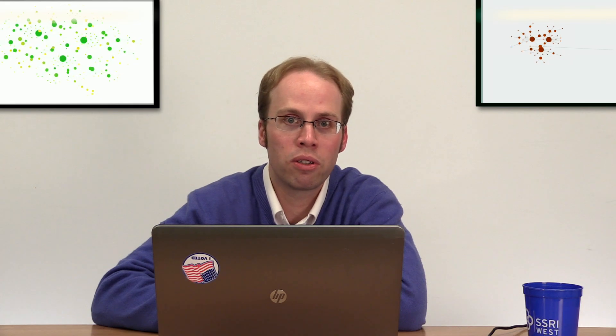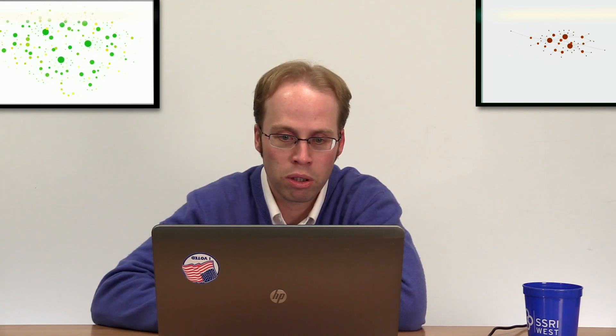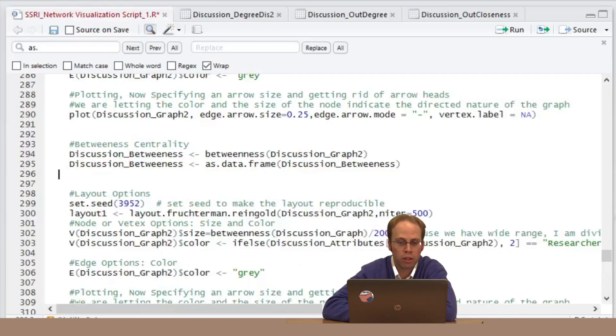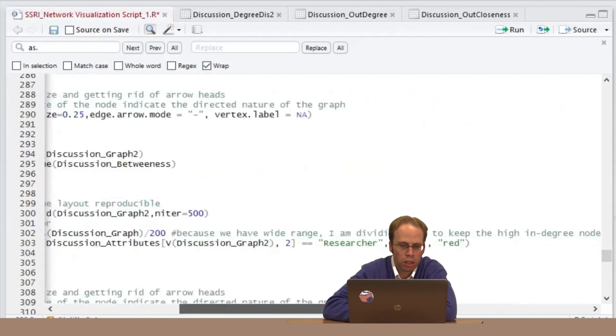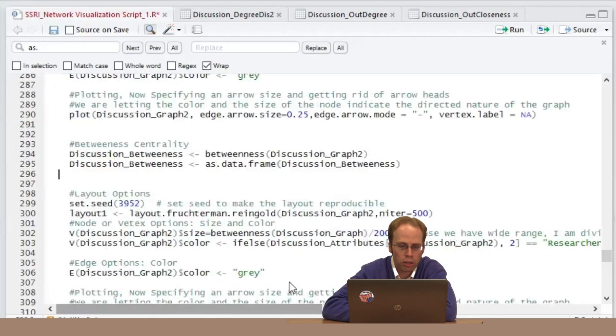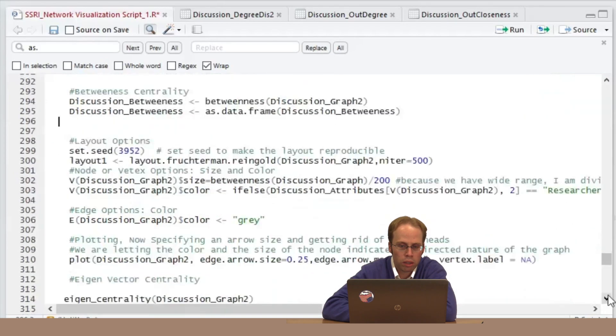And other network packages might do this for you, but this is R, so we have to do this ourselves. But it's okay. At least we're explicit and we know how we're scaling it. There's nothing black box, at least with respect to that. So let me go down here.